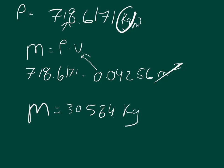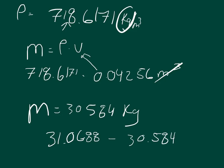The last part asks how many extra kilograms of gasoline you would get if you bought it at 0 degrees Celsius rather than at 16.5 degrees Celsius. From Part A, the mass at 0 degrees Celsius was 31.0688 kilograms, and the mass at 16.5 degrees Celsius is 30.584 kilograms. The difference is 0.48445601 kilograms.